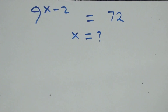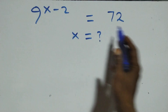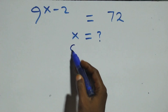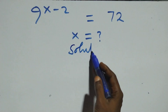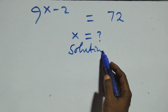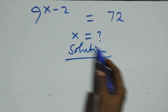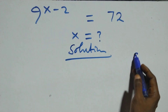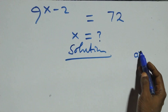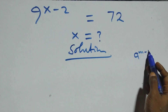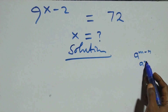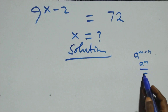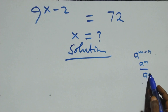Hello, you're welcome. How to solve this nice exponential equation. And what we have here: this follows when we have a raised to power n minus n, which is the same thing as a raised to power n over a raised to power n.